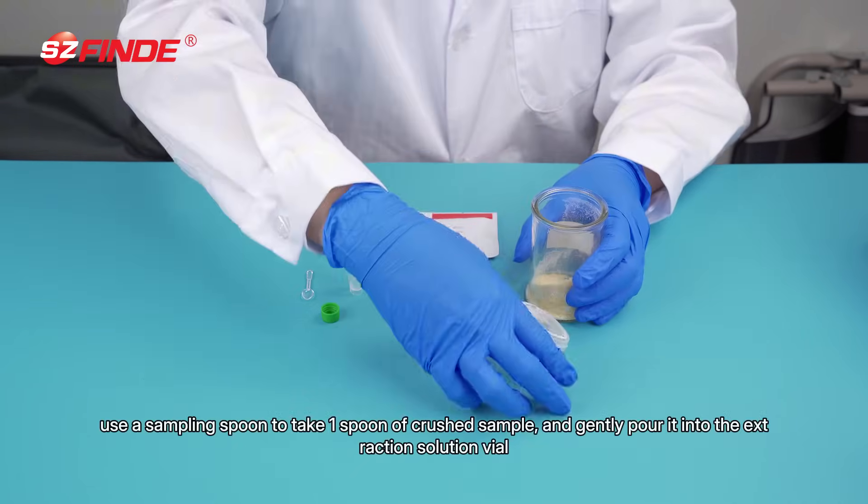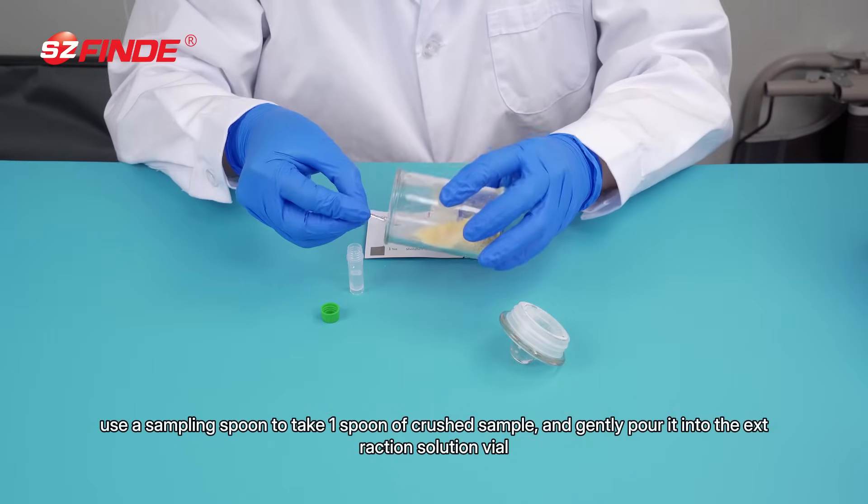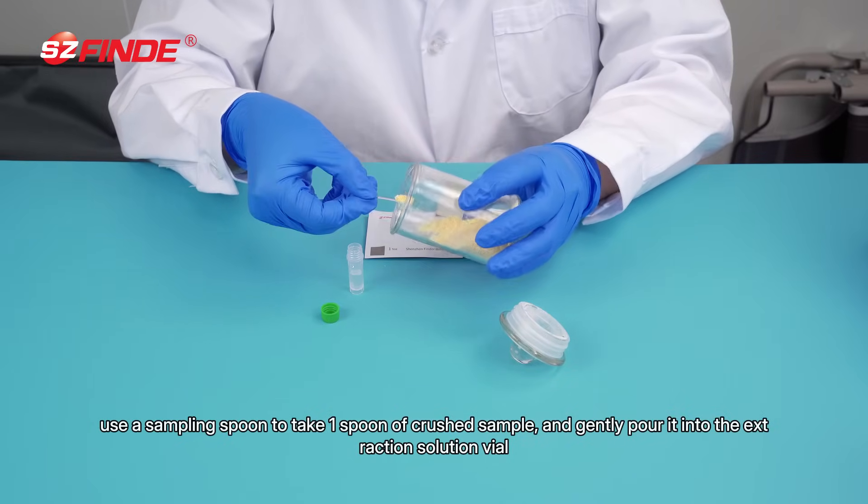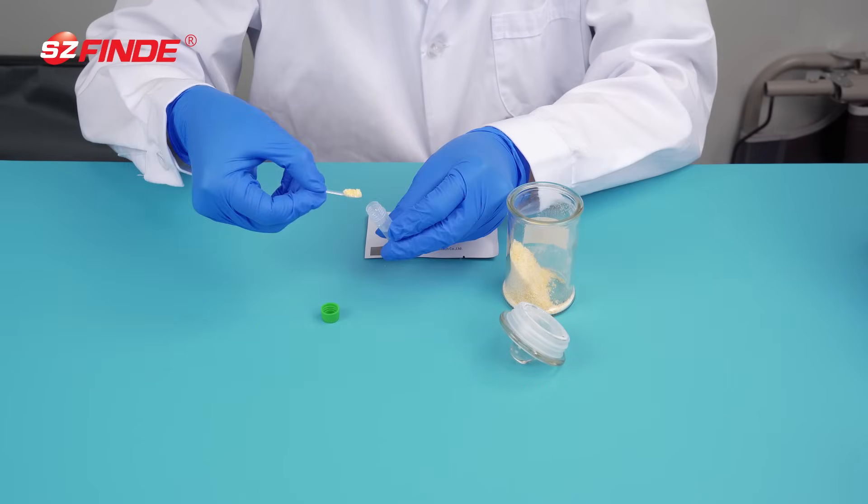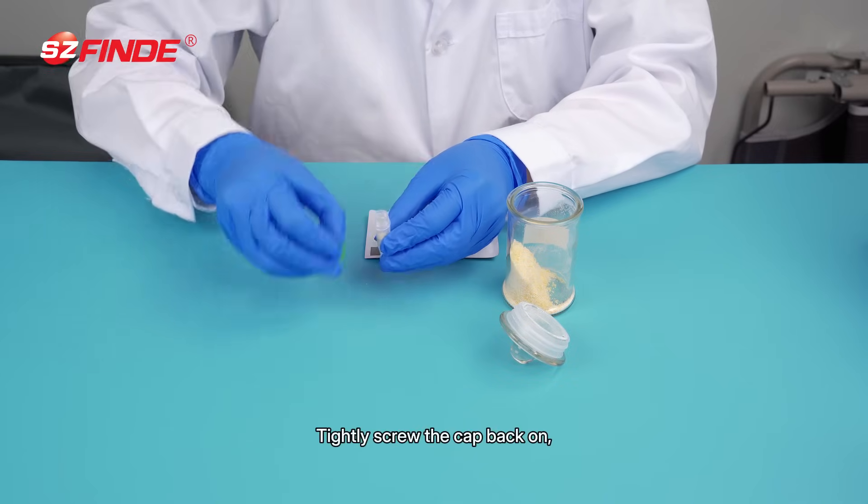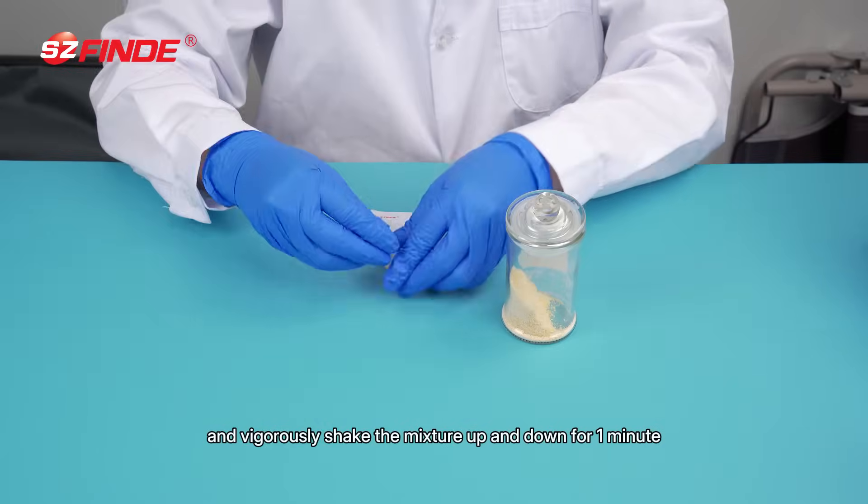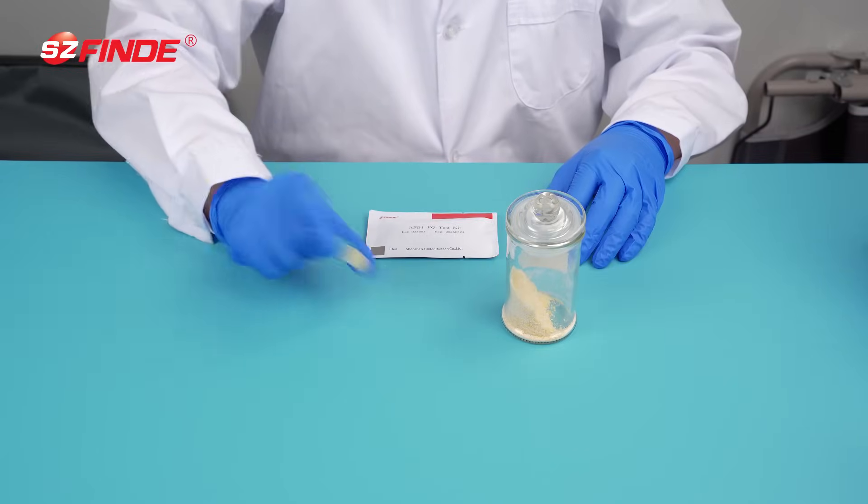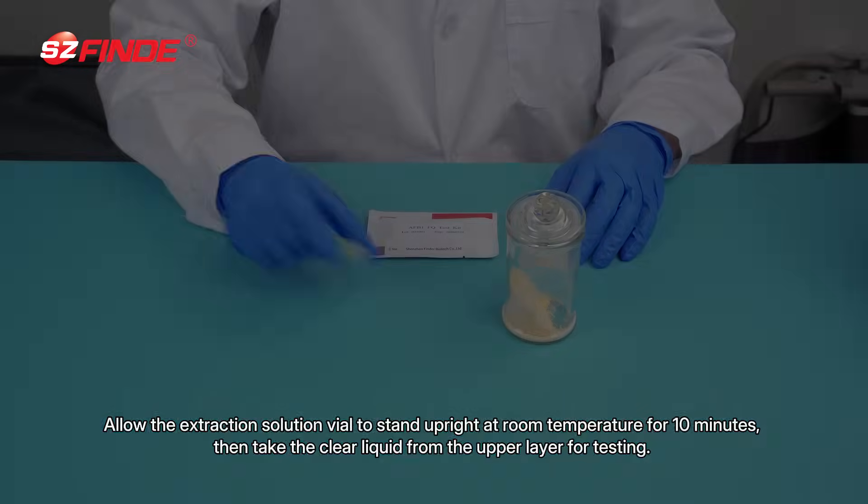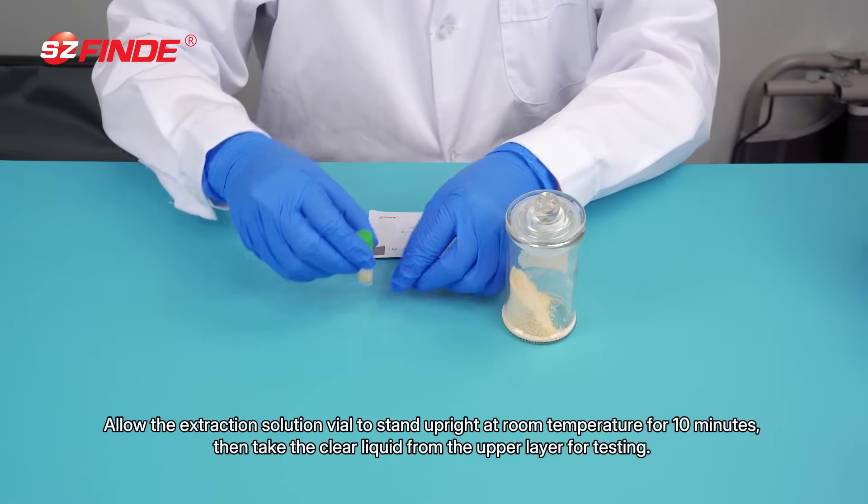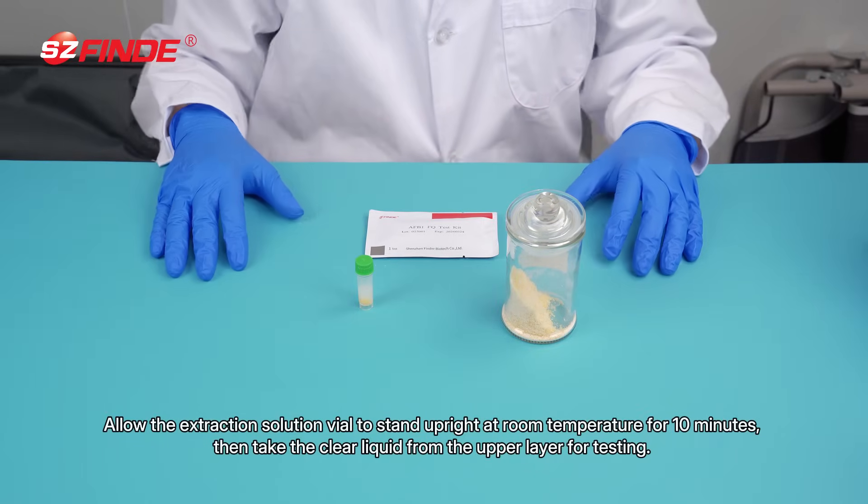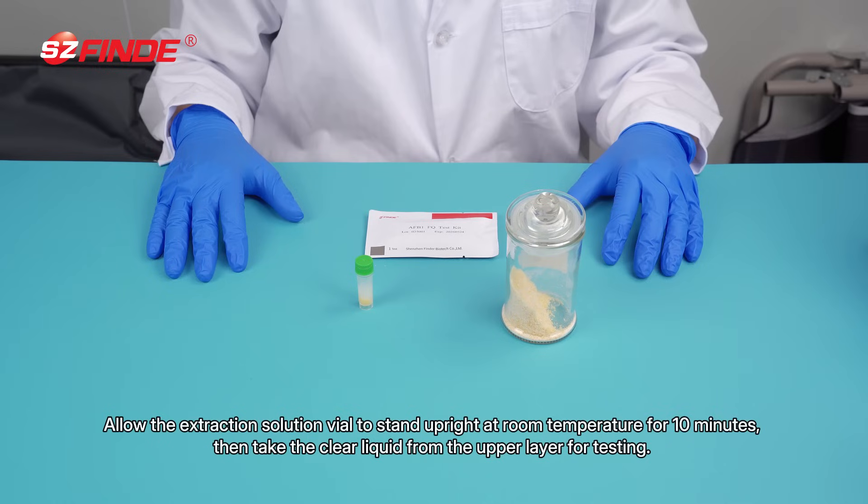Use a sampling spoon to take one spoon of crushed sample and gently pour it into the extraction solution vial. Tightly screw the cap back on and vigorously shake the mixture up and down for one minute. Allow the extraction solution vial to stand upright at room temperature for 10 minutes, then take the clear liquid from the upper layer for testing.